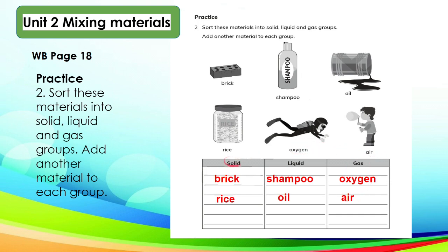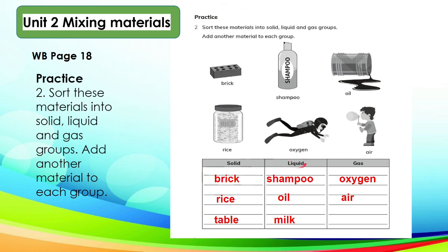Now you can think of other materials in each group. For solid, a table is very rigid and cannot be compressed. It has the characteristics of a solid with a definite shape and volume. For liquid, I have written here milk. It is an example of liquid because it has no fixed shape — it takes the shape of the container and the volume of the container or bottle in which it is kept. For the gas group, I have here a balloon. The actual balloon is a solid, but the air inside is a gas. The balloon floats because it is filled with helium, a type of gas.